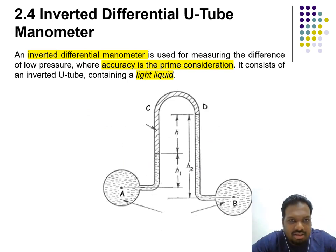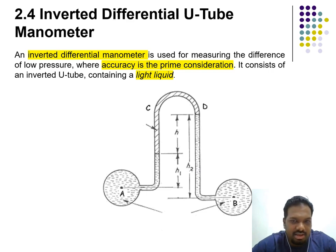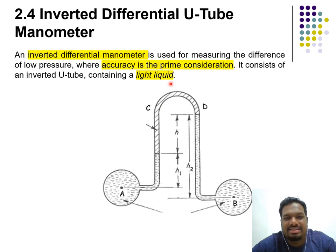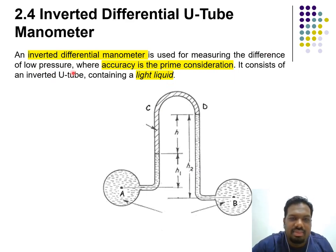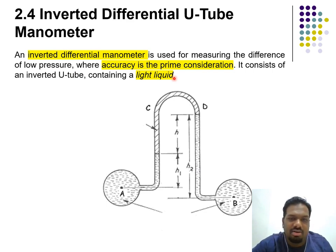We move to the next type: the inverted differential U-tube manometer. It is practically the same as the differential U-tube, just inverted. Because it is inverted, it is used for measuring low pressures where accuracy is the prime consideration. It contains a light liquid.